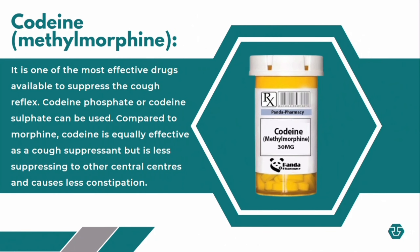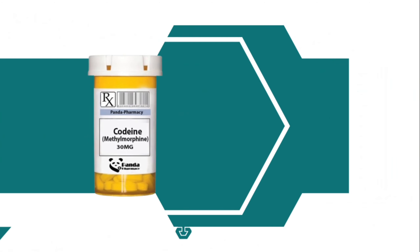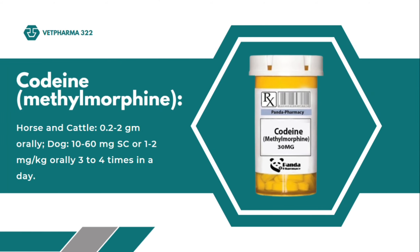Codeine, or methylmorphine, is one of the most effective drugs available to suppress the cough reflex. Codeine phosphate or codeine sulfate can be used. Compared to morphine, codeine is equally effective as a cough suppressant but is less suppressing to other central centers and causes less constipation. These are the dosages required of codeine in animals.